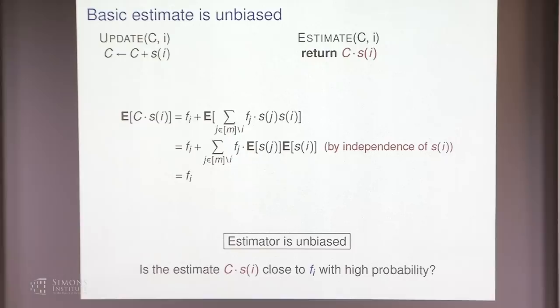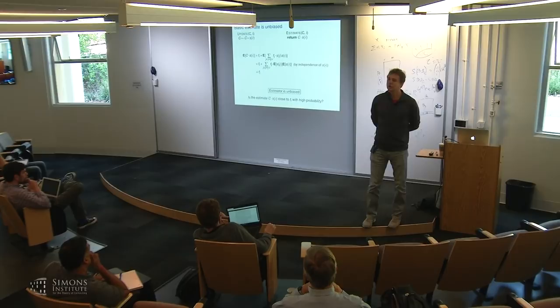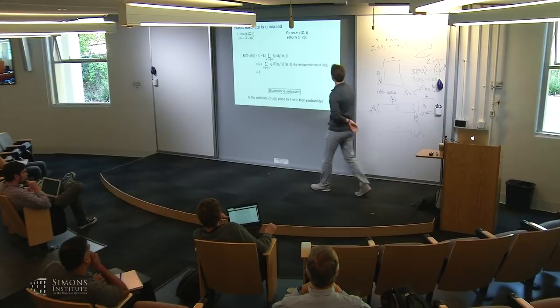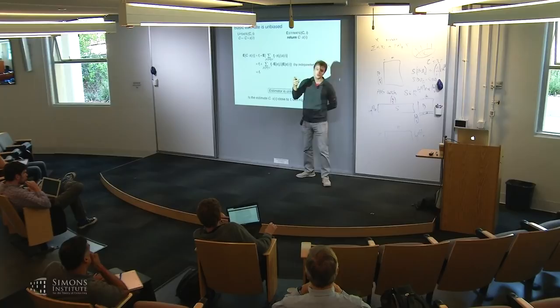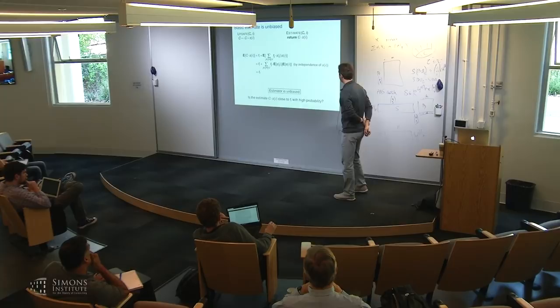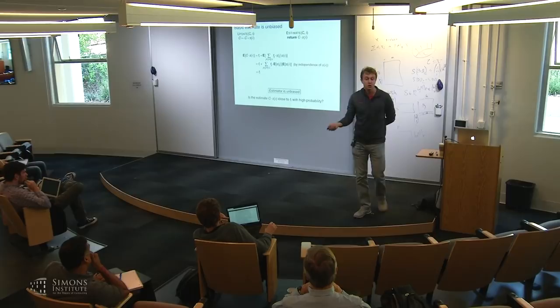A student asks how much independence is needed for this calculation. For this particular calculation, only pairwise independence is needed — essentially all we used was that the expectation of the product of two signs for different elements is zero. But we also want the estimator to be close to the true value with good probability, which requires bounding the variance.